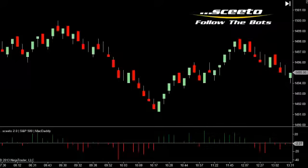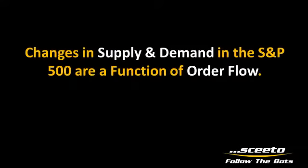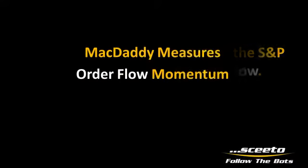This phenomenon occurs over and over again. I think it is so consistent because changes in price in the S&P 500, just like any other market, are a function of changes in supply and demand. And in the E-mini S&P, supply and demand is dictated by order flow. And since MacDaddy shows changes in order flow momentum, it is logical that increases in order flow momentum should have a downstream effect on changes in price.